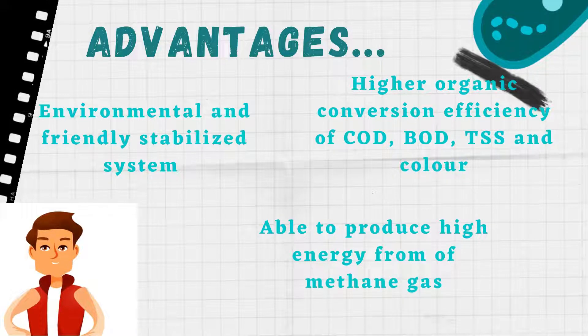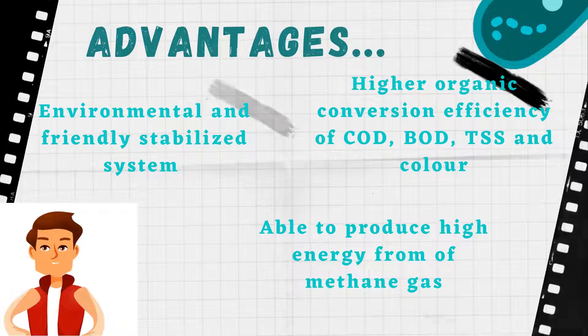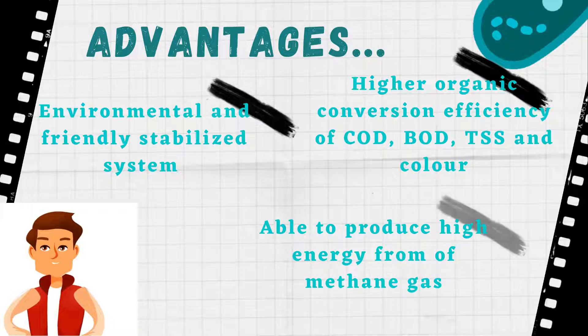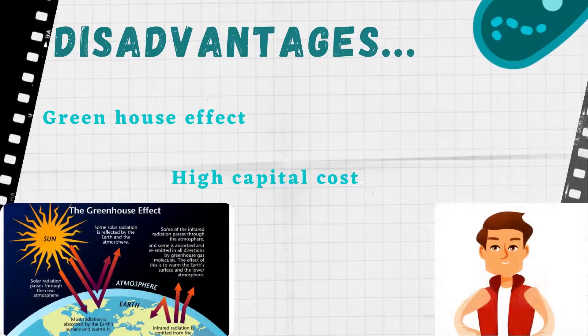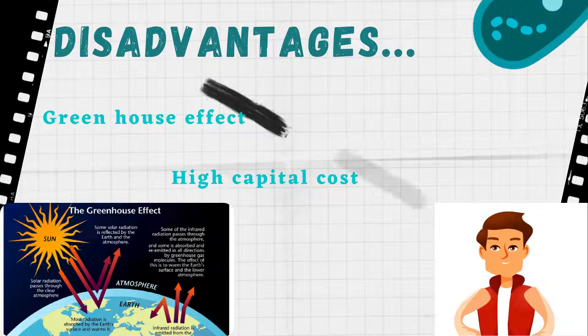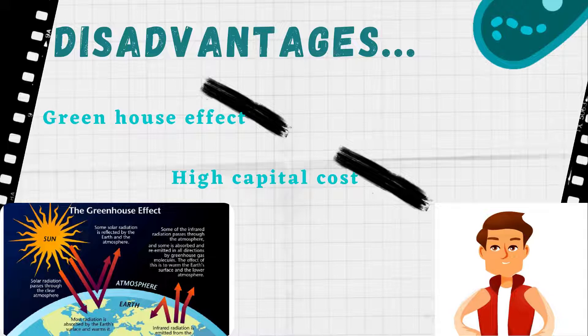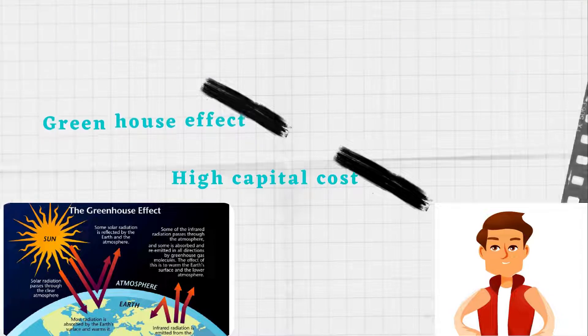The advantages of biological treatment include higher organic conversion efficiency of COD and BOD, an environmentally friendly and stabilized system, and the ability to produce high-value energy in the form of methane gas (CH4). The disadvantages of biological treatment are the greenhouse effect and high capital cost.